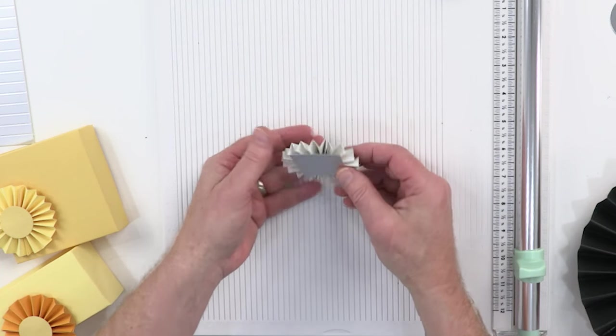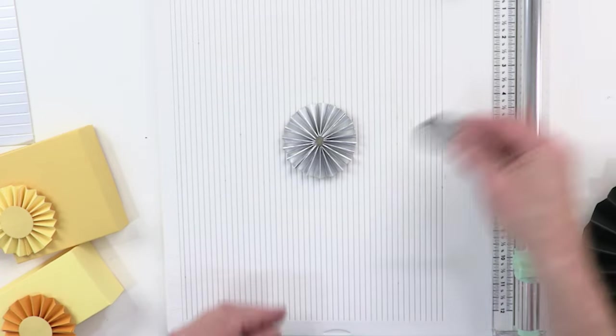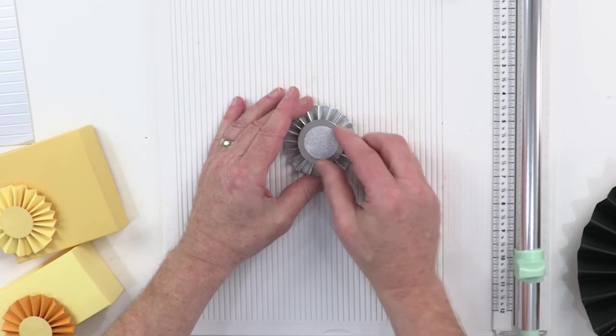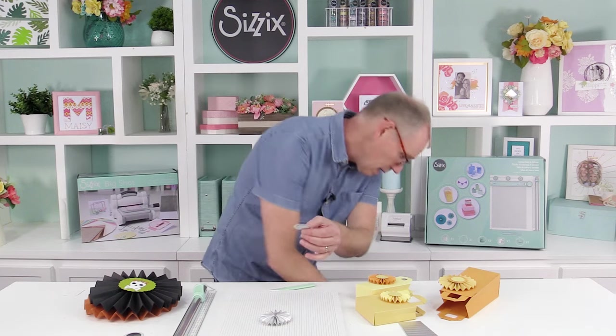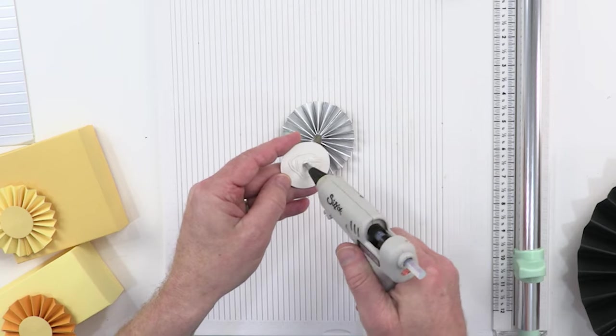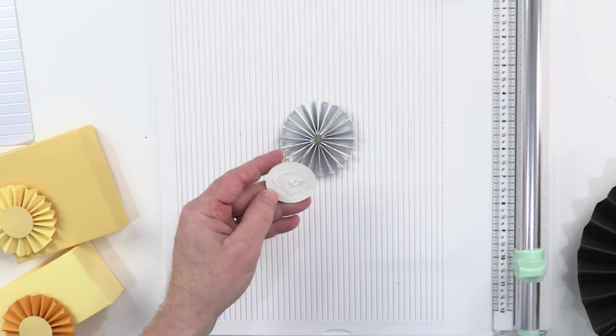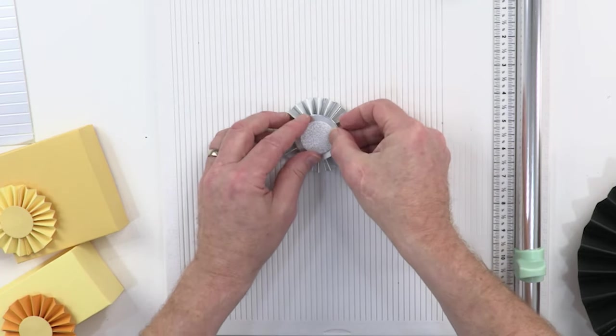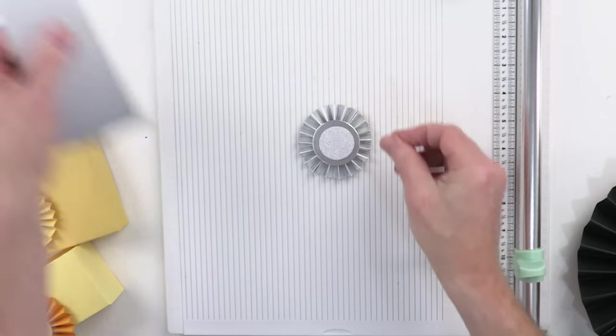If you want to cover the front, maybe take a couple of die-cut circles. I die cut these using Sizzix frameless dies, but whatever you have to hand. And then you can decorate that further as well should you wish. And there we are.